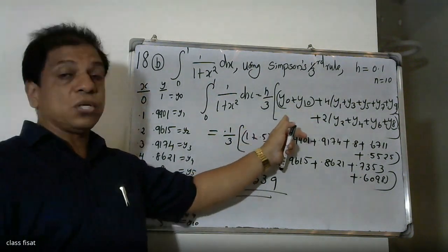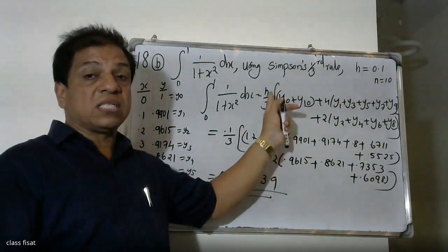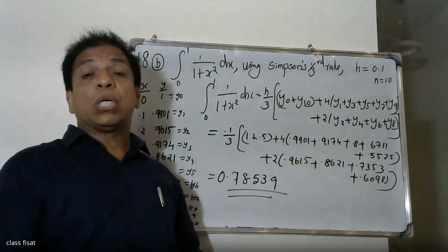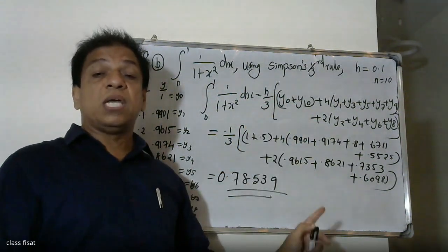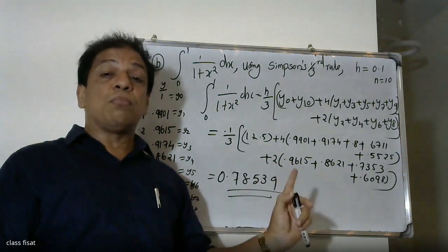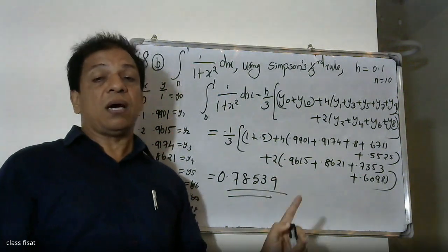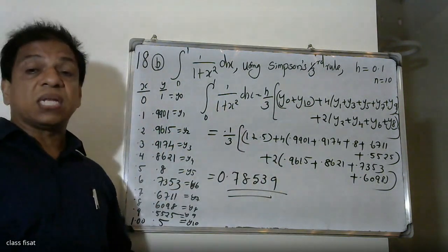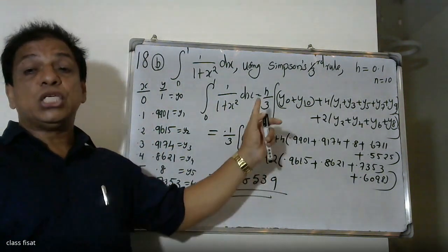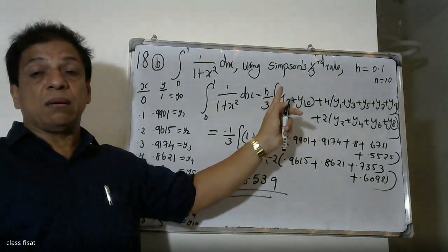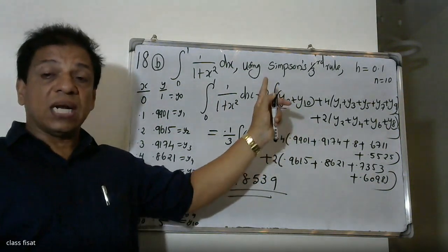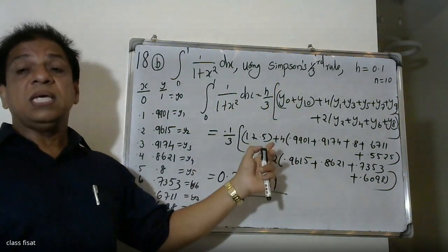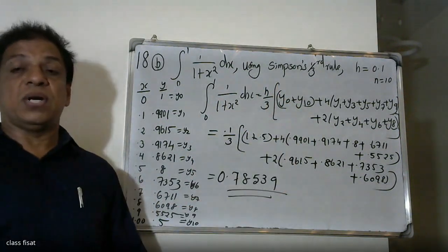If we integrate this formula directly, we also get the answer 0.7853. The number of intervals is 10, so we can apply Simpson's one-third rule successfully.